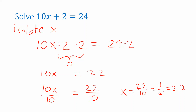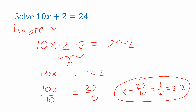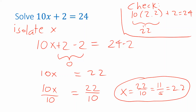We tend to avoid mixed numbers in algebra because they can look like multiplication. So I won't write a mixed number, but 11/5 and 2.2 are both valid. To check, plug 2.2 back in: 10 times 2.2 equals 22, and 22 plus 2 equals 24. That confirms it's correct. After solving a linear equation, it's often a good idea to plug the answer back in and verify.